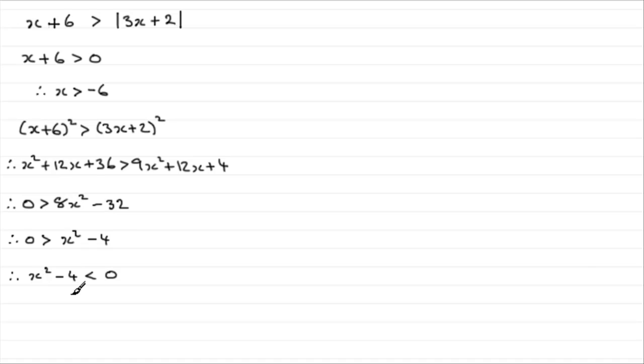Now I want to factorise this so that I could find out the critical values, and that would be x minus 2 times x plus 2 if I factorise it, which is less than 0. And so the critical values would be where this equals 0, and it would be when x is 2 or minus 2. So therefore the critical values are going to be x equals 2 and x equals minus 2.